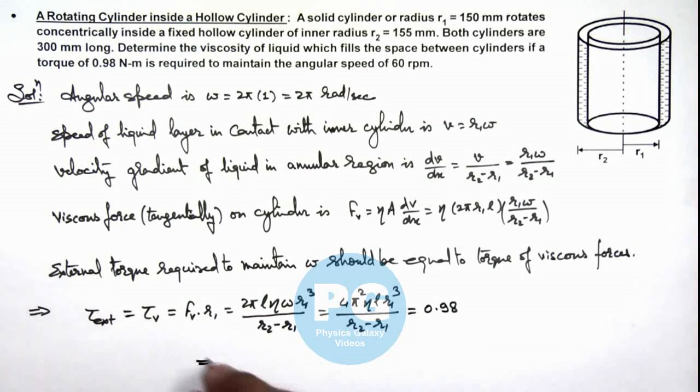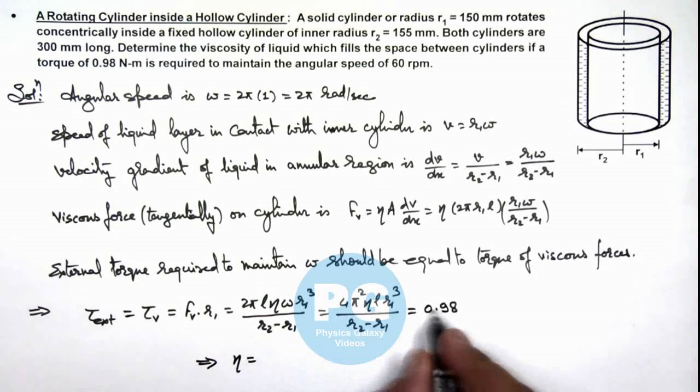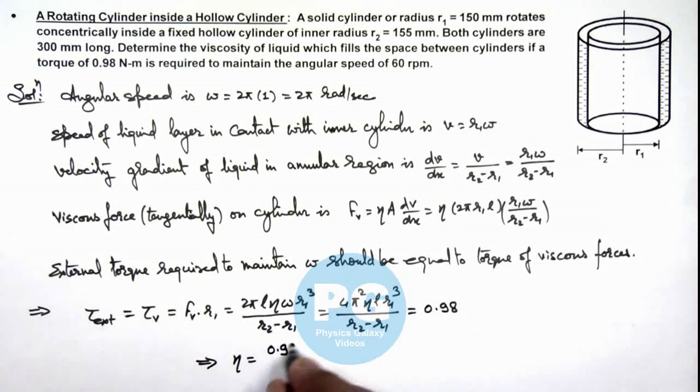So this implies the value of η we are getting is: this 0.98 multiplied by r2 minus r1 is 5 mm, so this multiplied with 5 × 10⁻³, divided by 4π².